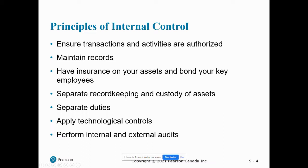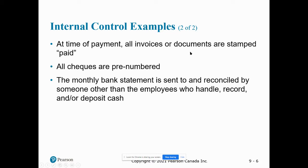Other internal control examples: when a payment is received or documents come in, things are stamped — date stamped or stamped with 'paid.' Checks in a business are pre-numbered. This helps because if there's open access to checks, they can be stolen, and if they're not numbered properly, it may not be clear that something went missing until later on. In this chapter, we're going to look at receiving the monthly bank statement and reconciling it — comparing banking records to the general ledger accounts to ensure everything is balanced.